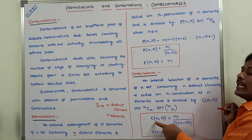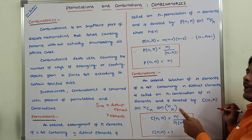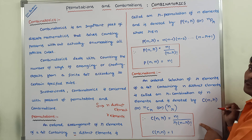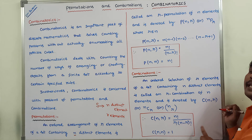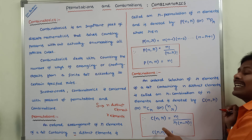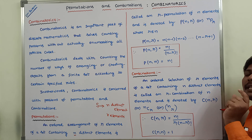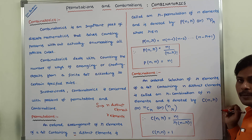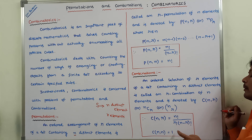The formula for combinations is: C(N, R) equals N factorial divided by R factorial times (N minus R) factorial. Also, C(N, N) equals 1, meaning if we select all N elements from a set containing N distinct elements, there is only one way to do so.